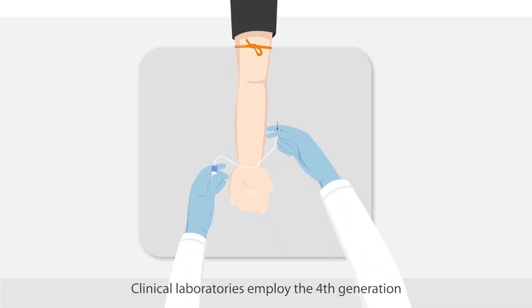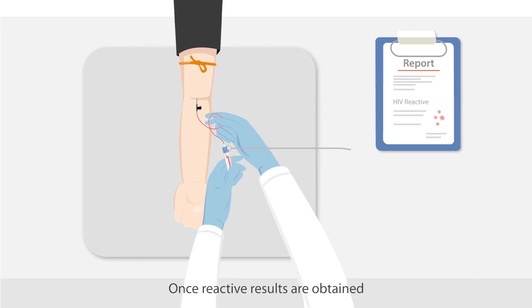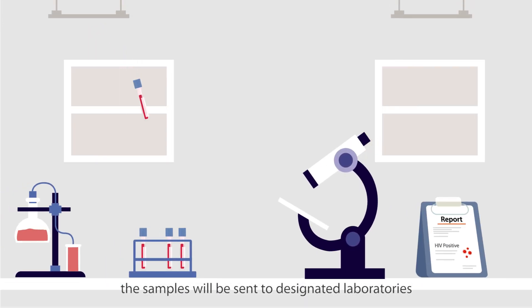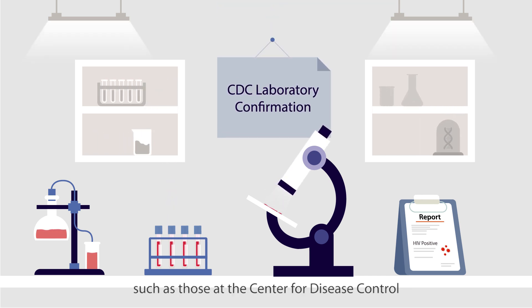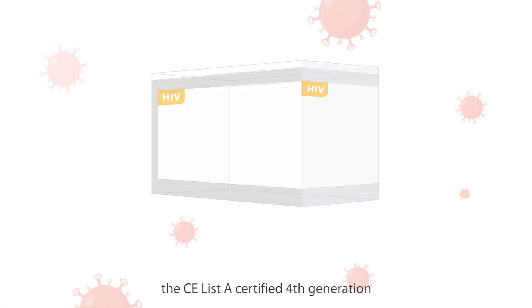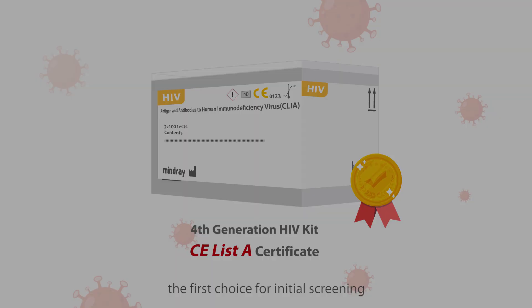Clinical laboratories employ the fourth-generation HIV assay for screening purposes. Once reactive results are obtained, the samples will be sent to designated laboratories, such as those at the Center for Disease Control, for confirmation. Thanks to its outstanding performance, the CE List A certified fourth-generation HIV tests are recommended as the first choice for initial screening.